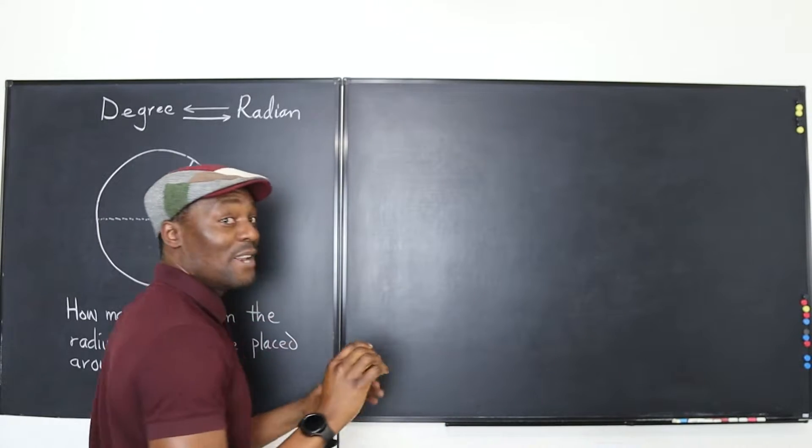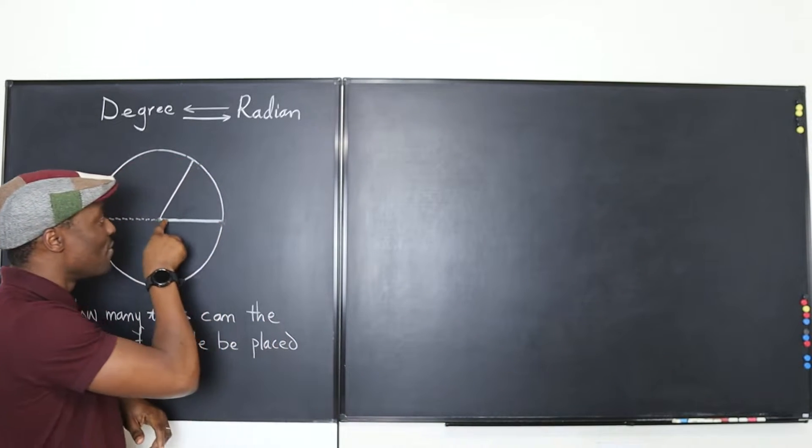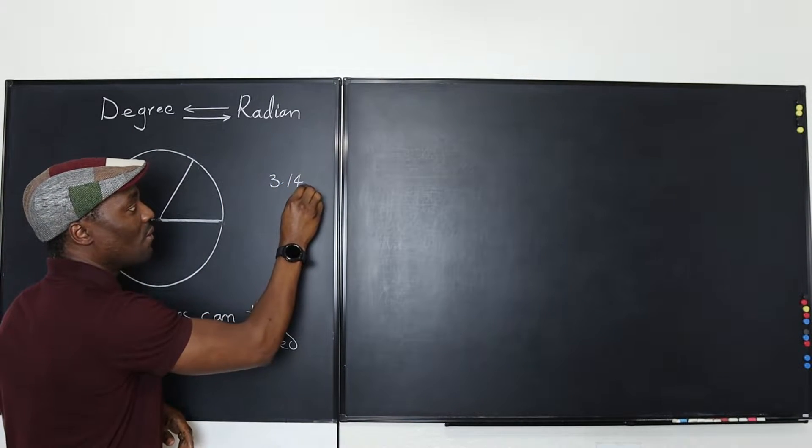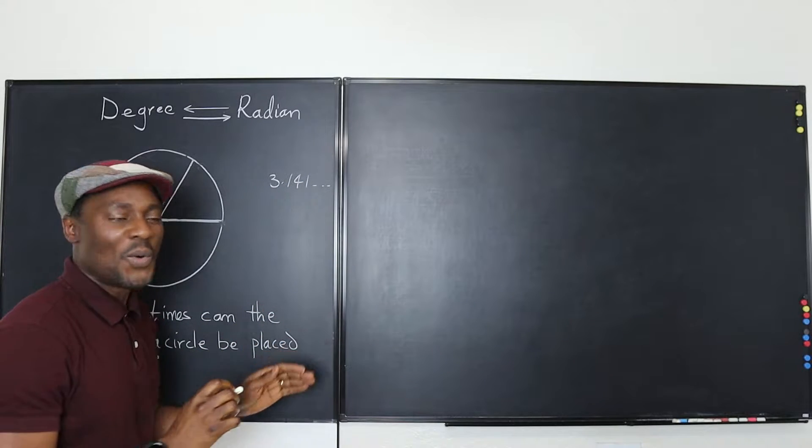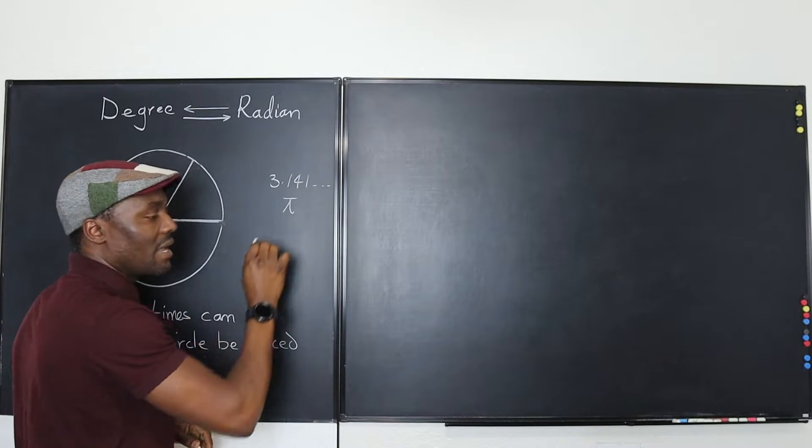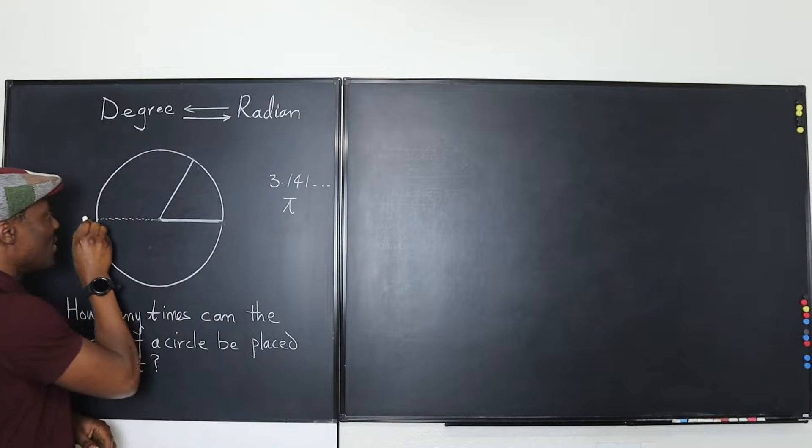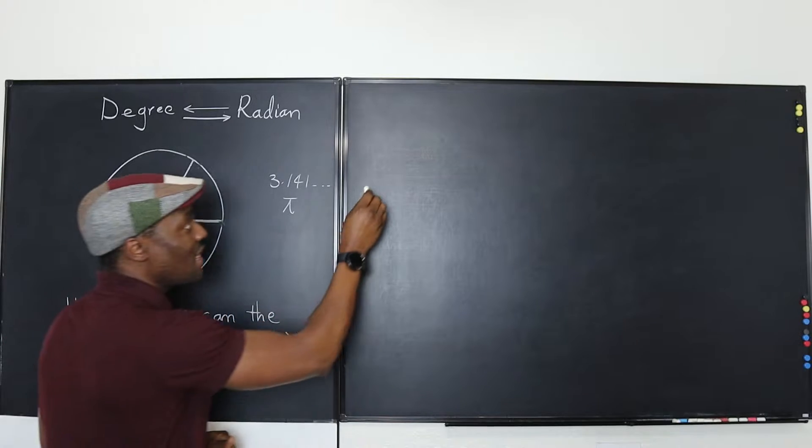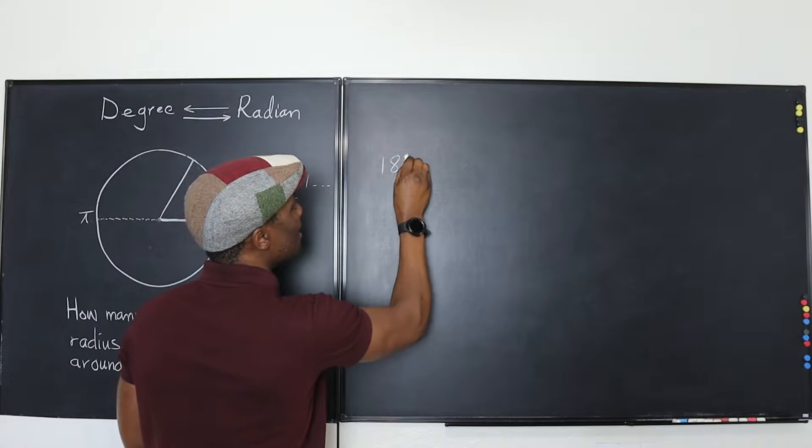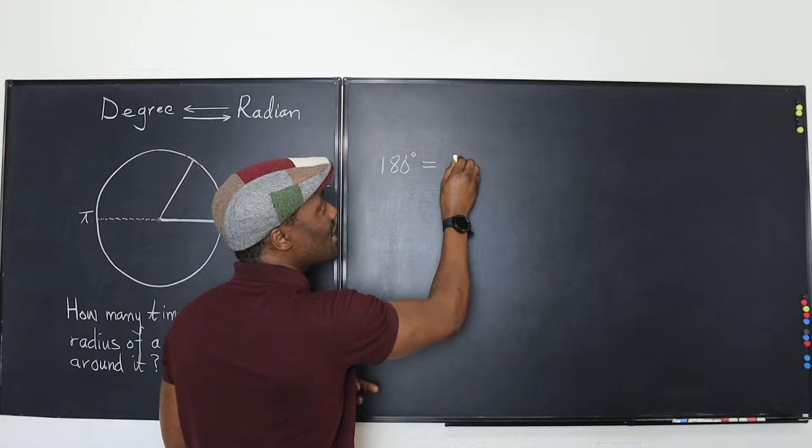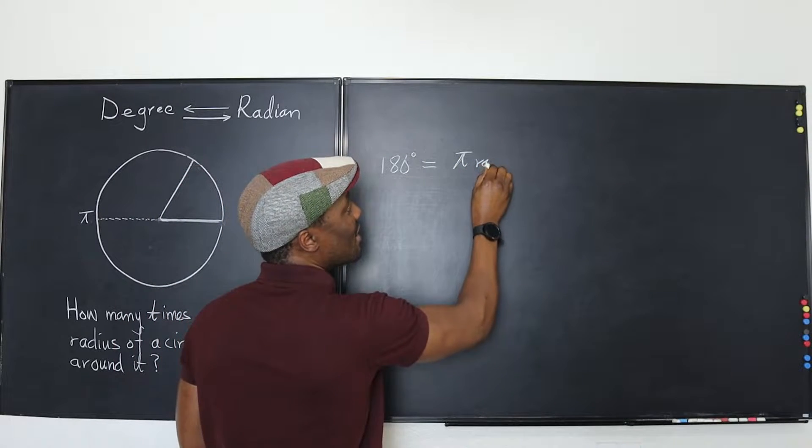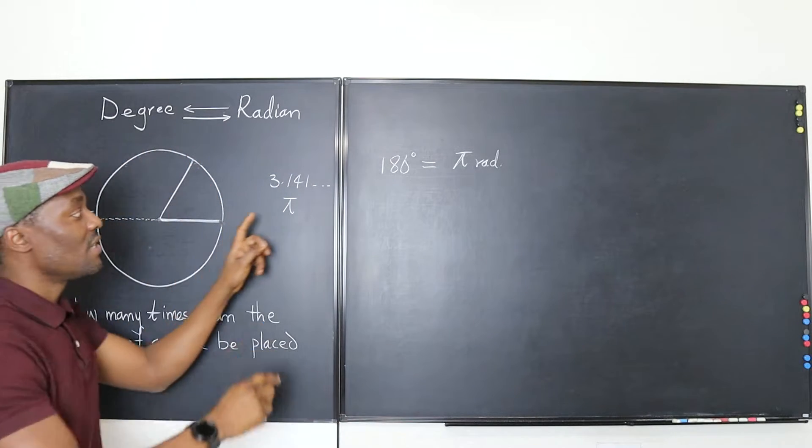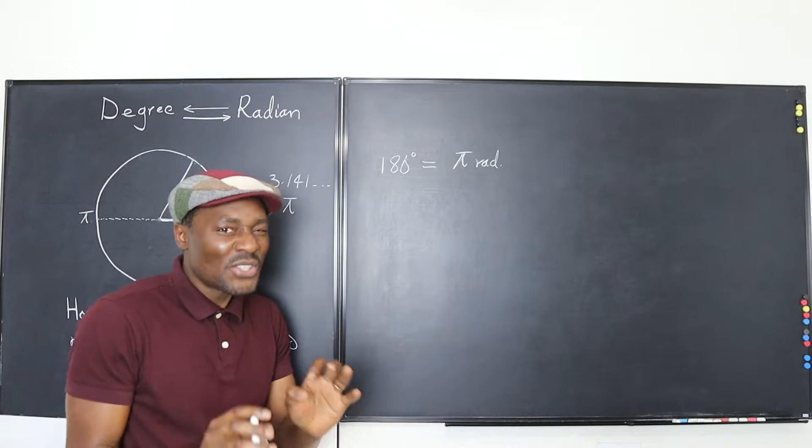You see that slightly more than three is what we call pi. So in reality the number of radii you're gonna get in a semicircle is 3.141 blah blah blah and it keeps going and we just say it's pi. Just slightly above three.